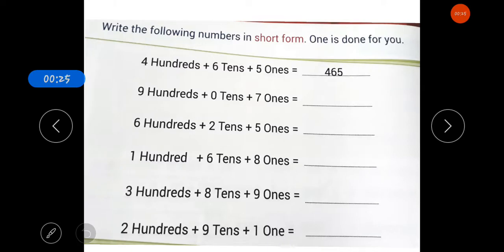Your first worksheet is: write the following numbers in short form. One is done for you. For short form, like 4 hundreds plus 6 tens plus 5 ones, you can also write the places at the top. So 4 hundreds, you have 4 in the hundreds place. Then 6 tens, you write 6 in the tens place. Then in the ones place, you write 5.